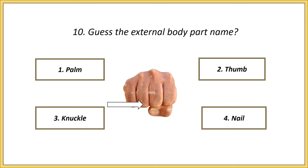Tenth one. Guess the external body part name. Options: palm, thumb, knuckle, nail. Answer is knuckle.